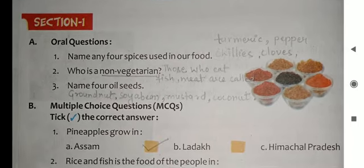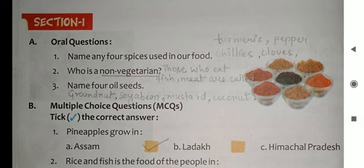Section 1A: Oral questions — you also need to write these in your copy as they will come as short answer questions. Name any four spices used in our food: turmeric, pepper, chilies, and cloves. Second: Who is a non-vegetarian? Those who eat fish and meat are called non-vegetarians. Third: Name four oil seeds — groundnut, soya bean, mustard, and coconut.